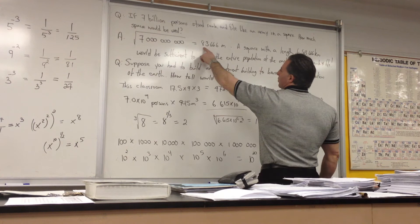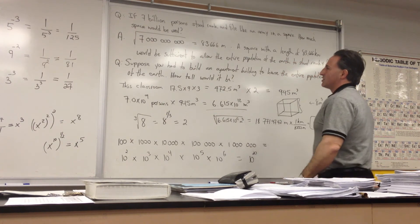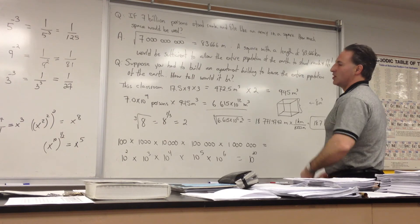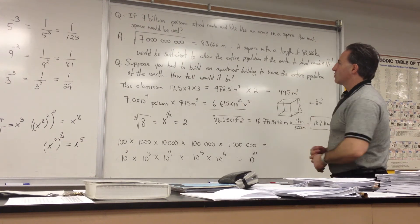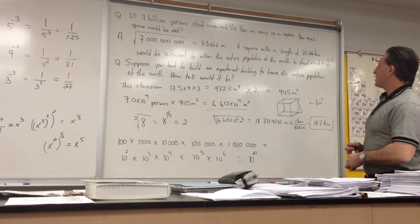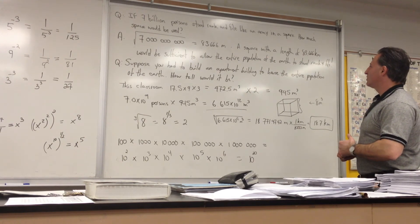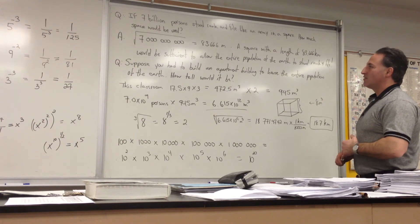As it turns out, you would have a row with 83,666 people in it. And it would also be 83,666 meters wide and long. So it would be a square. So a square with a length of 83.6 kilometers would be sufficient to allow the entire population of the earth to stand rank and file.